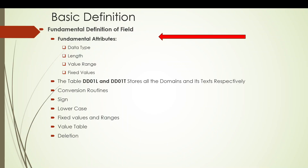Domain is called one of the fundamental elements in our data dictionary, and it gives us a basic definition to a field. The fundamental attributes that contribute towards this definition are data type, length, value range, and fixed values. All four of these fundamental attributes define the field, and thus domain serves as the fundamental definition of a field.